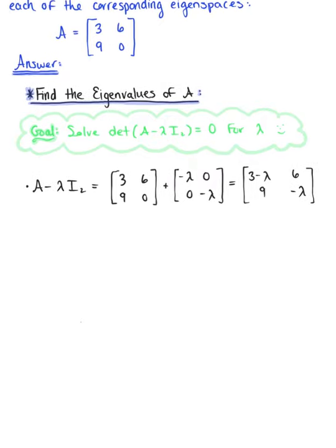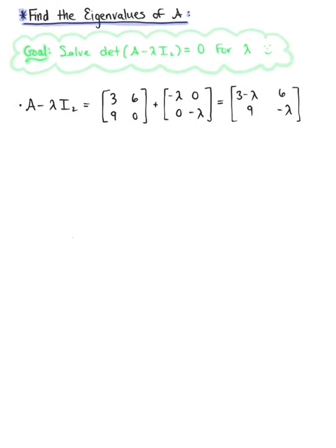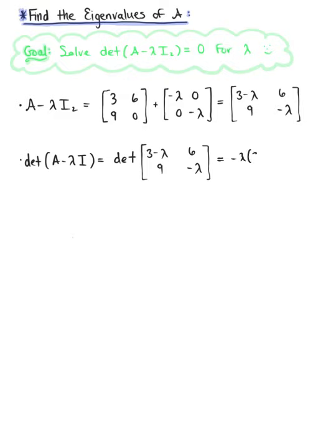We are now ready to find the determinant of matrix A minus lambda times the identity matrix. We know the determinant of a 2 by 2 matrix is AD minus BC, so we have negative lambda multiplied by 3 minus lambda, minus 6 times 9, which leaves us with lambda squared minus 3 lambda minus 54.